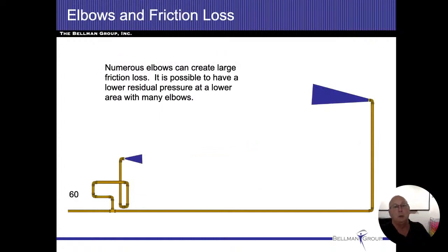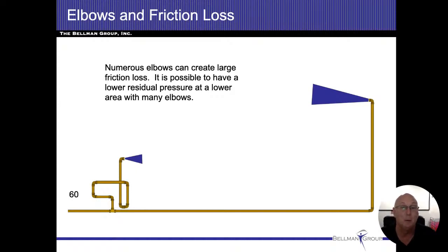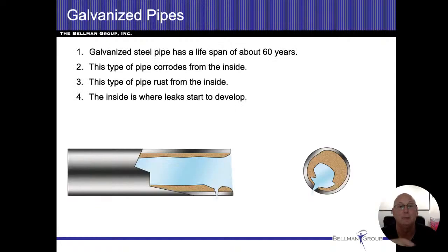Elbows and friction loss — obviously the more bends and fittings we put into the pipe, the more friction loss there's going to be. I think this is more common sense. There's no science to it. I don't know anybody who does a loop-de-loop with the plumbing.